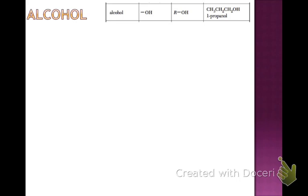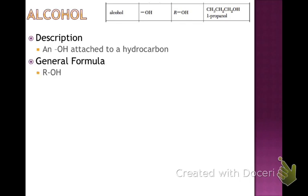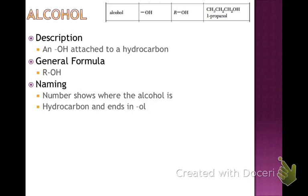Next are alcohols. Alcohols are easy to recognize because they have an OH group attached to the hydrocarbon chain. The general formula is R-OH, where R represents the hydrocarbon chain and OH is the functional group. When naming, the number shows where the alcohol is and the hydrocarbon ends in OL. The example is CH₃-CH₂-CH₂-OH, which condenses to C₃H₇OH.